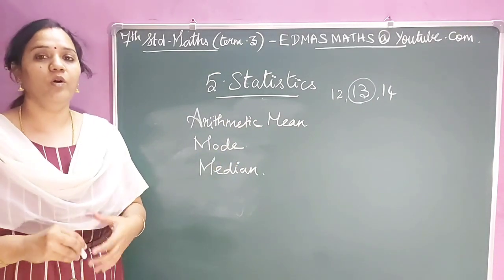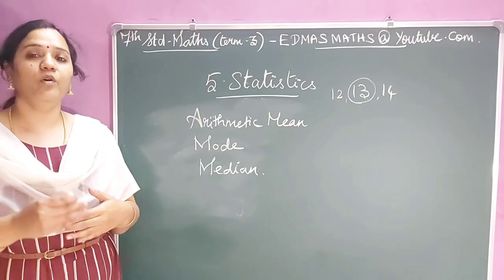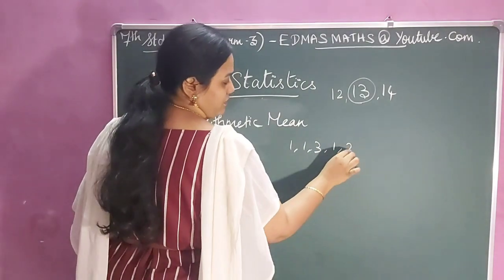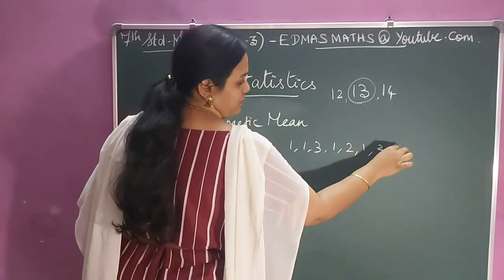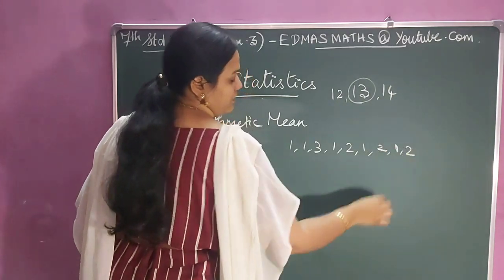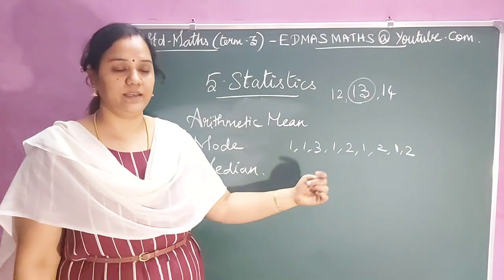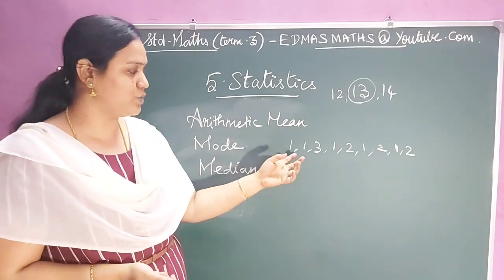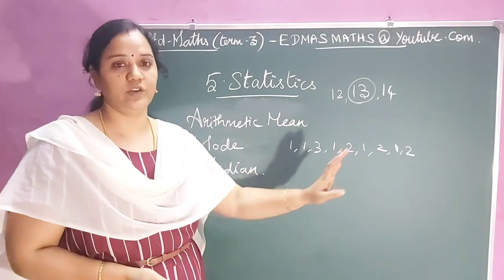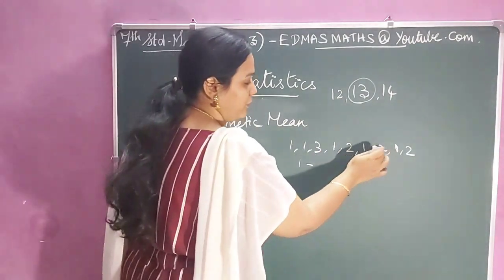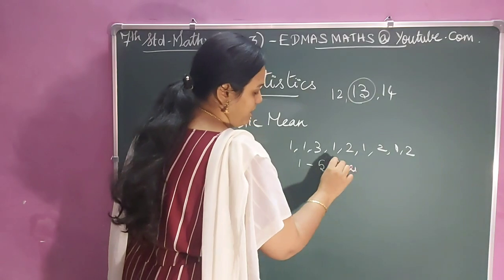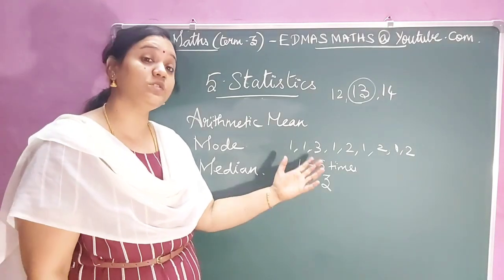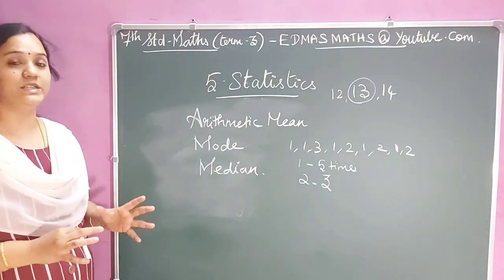Next one is mode. Mode is nothing but the most frequently repeated data. For example, I have sample data here — so which is the most repeated data? 1 is repeated 5 times, but 2 is repeated 3 times. So 1 is the most repeated data. That is known as mode.